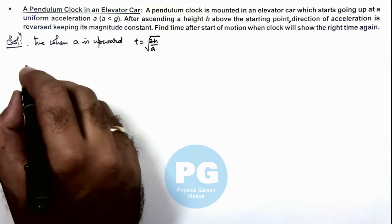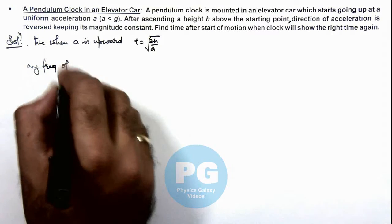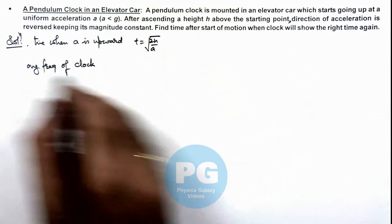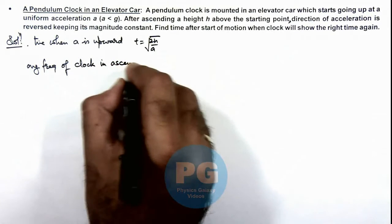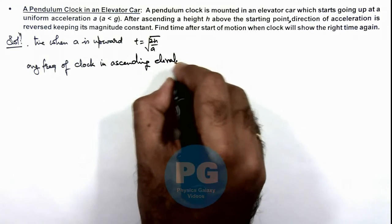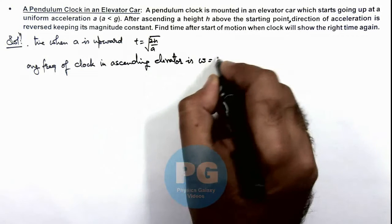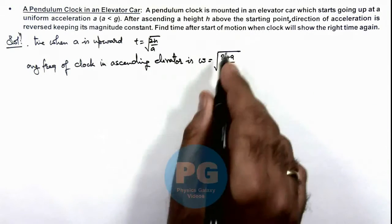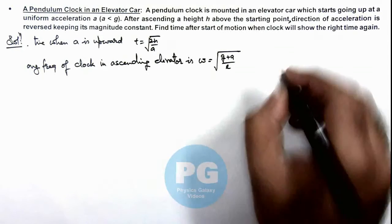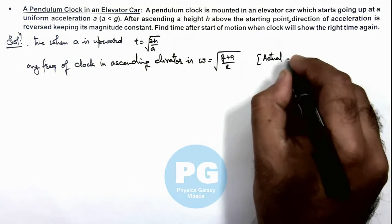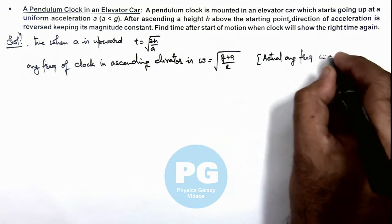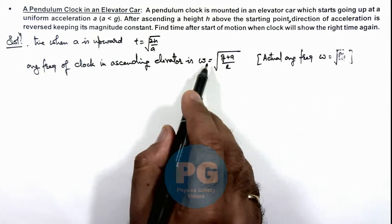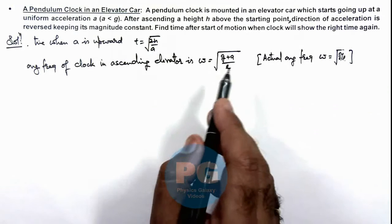If we calculate the angular frequency of the clock — we are talking about a pendulum clock so we consider it like a simple pendulum — the angular frequency in the ascending elevator can be given as root of (g plus ay) by l, because in an elevator going up the effective gravity is g plus ay. The actual angular frequency of the clock when the elevator is at rest on earth is root of g by l. Since the angular frequency increases, the clock becomes faster and will gain time.